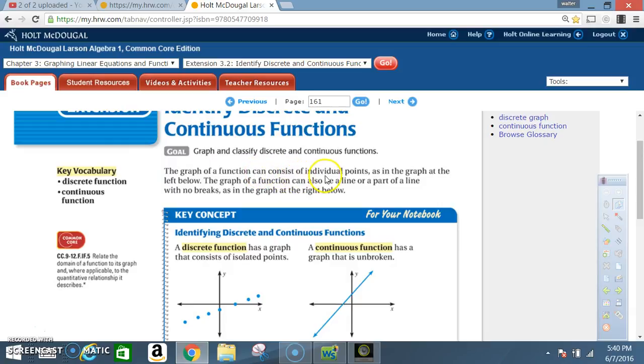consist of individual points, as in the graph at the left below. The graph of a function can also be a line or part of a line with no breaks, as in the graph at the right below.